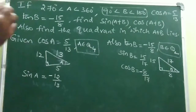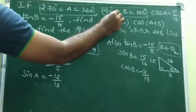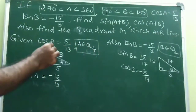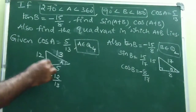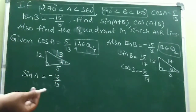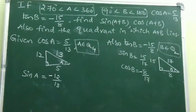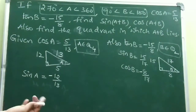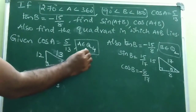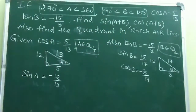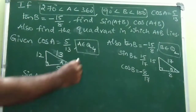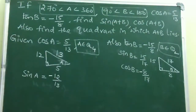Once more: A belongs to Q4, B belongs to Q2. We know every trigonometric ratio's sign depends on the quadrant. Find all three sides of the right-angle triangle, then write sine, cos, tan, etc., with appropriate positive or negative signs based on the quadrant.